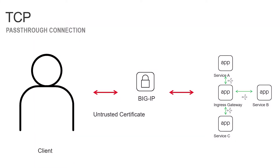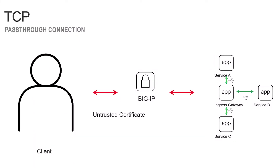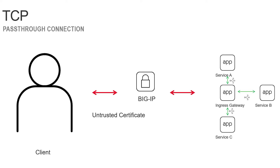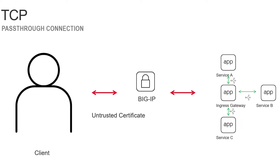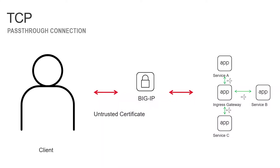Here in scenario one, we can see that the BIG-IP is just acting as a TCP proxy to the Istio Ingress gateway. In this case, the BIG-IP is taking the external connection that's coming from the client, connecting it over to Istio, and that's it. What you'll observe in this first example, when we do the demo, is that when the client connects, they will see a certificate error because they are receiving an untrusted certificate from the Istio Ingress gateway.